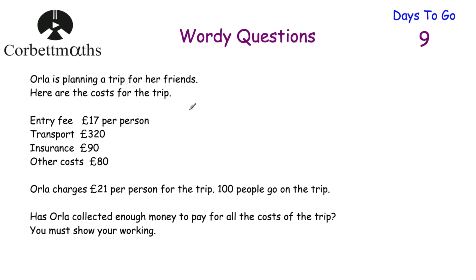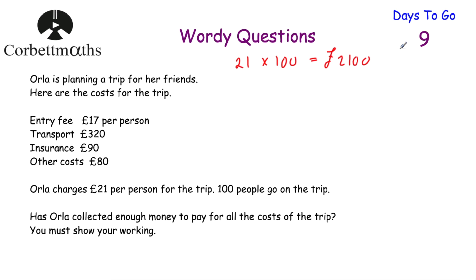I've read it again just to make sure I understand. Orla's organising a trip with these costs, she charges each person £21, and 100 people go on the trip. We need to find out whether she's collected enough money. First, let's work out how much money she receives: £21 × 100 = £2,100. I'll note that down — that's how much Orla receives. With these wordy questions it's okay to annotate beside your working so you don't lose track of the numbers.